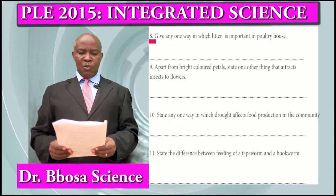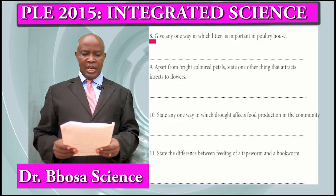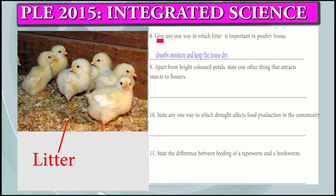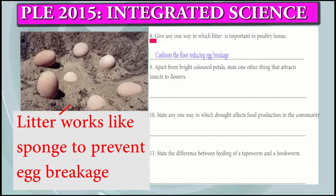Question 8: Give one way in which litter is important in a poultry house. It absorbs moisture and keeps the house dry. It insulates the house and keeps it warm. It cushions the floor and reduces egg breakage.